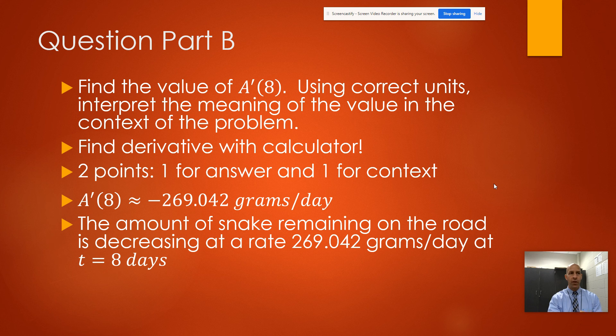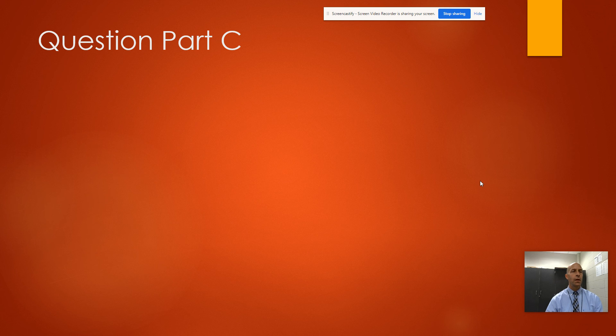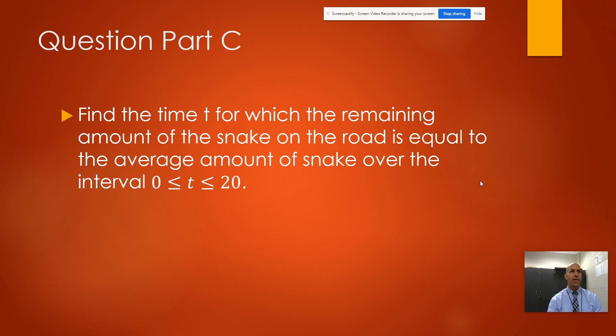Part C: Find the time t for which the remaining amount of the snake on the road is equal to the average amount of snake on the interval 0 to 20. We want to find when the amount remaining is equal to the average amount.